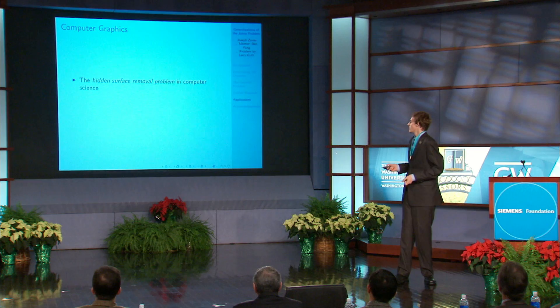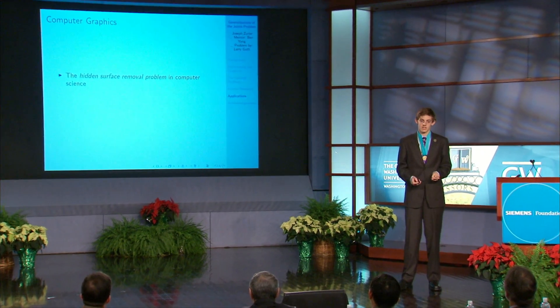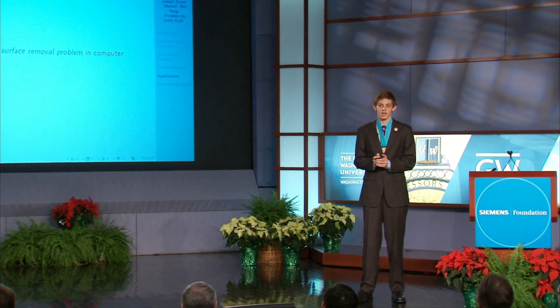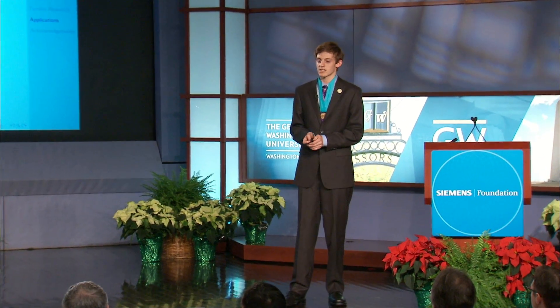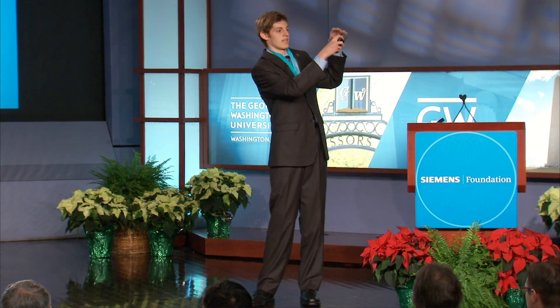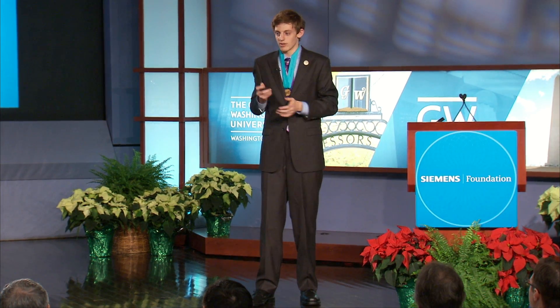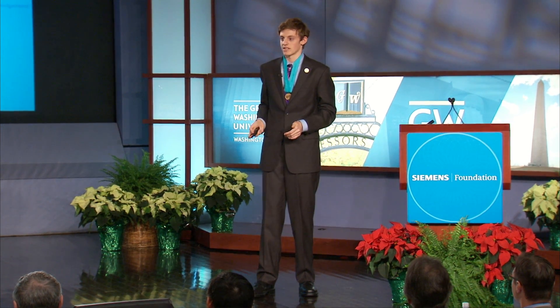The joints problem is a mathematics problem, but it was not introduced in a mathematics paper — it was introduced in a computer science paper in the subfield of computational geometry, in the context of the hidden surface removal problem. This is the problem where, given a collection of lines, planes, and objects, we want to look at them from the perspective of a point; some are going to be hidden behind others, and it's an algorithmic problem to render them. If we know more about the structure of how joints behave in three dimensions, we can do work bounding the computational complexity of these computer graphics algorithms.